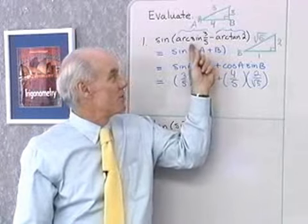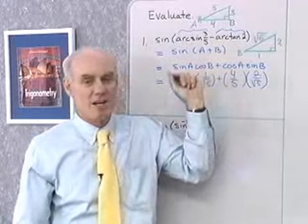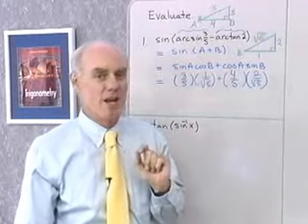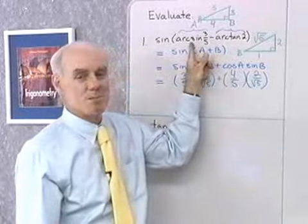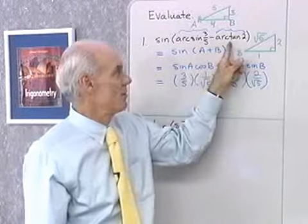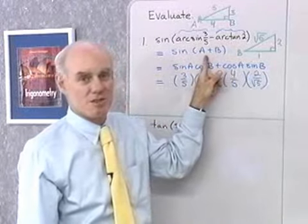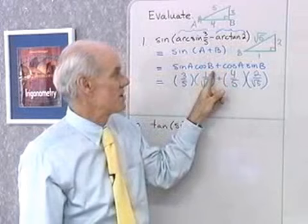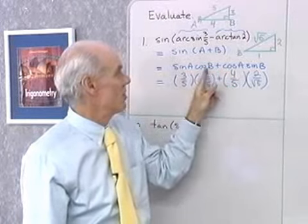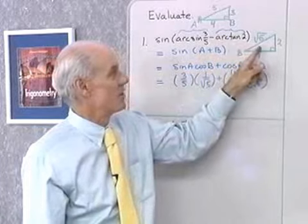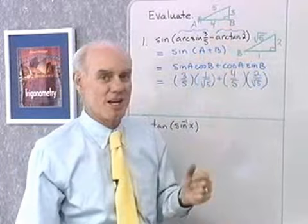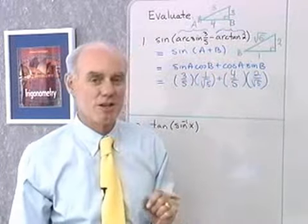But the thing to remember about this notation for arc sine and arc tangent is it stands for an angle. So, if you get a complicated expression like this, you can let this be angle A and this be angle B. Now, your expression is a little simpler to look at. I see it's an expansion formula. Now, I just need to know these individual things. So, I go back and look at the information that I've given, draw these little triangles, and I have those numerical values. Let's look at another problem.